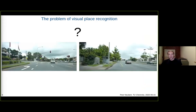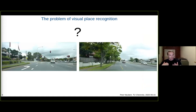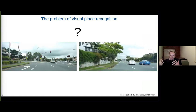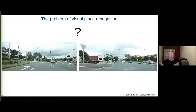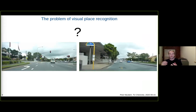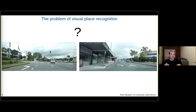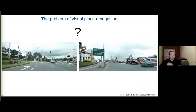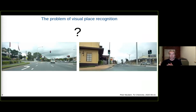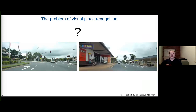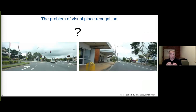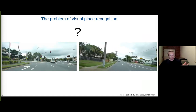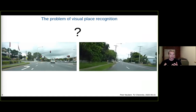One part of localization is visual place recognition, and I will use this as a use case where we apply vector symbolic architectures. This is mainly an image retrieval task — assume we have the current camera view from a robot or self-driving car on the left, and a database of known places on the right. The question is: which frame from the database corresponds to the current image from the robot?